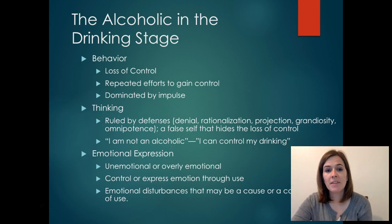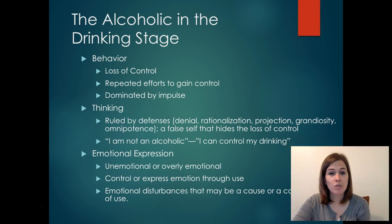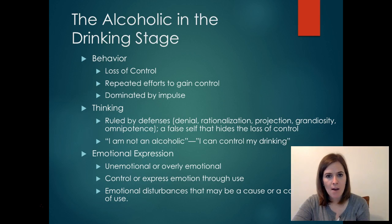Let's talk more specifically about the alcoholic in the drinking stage. As far as behavior, there's loss of control, repeated efforts to gain control, and it's dominated by impulse. This person is compulsively using whatever substance — here we're talking about alcohol obviously. The behaviors are compulsive, and this is where the disease model really factors in. They don't really feel like they have control or have the option to not choose to use.